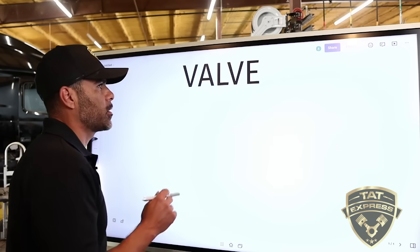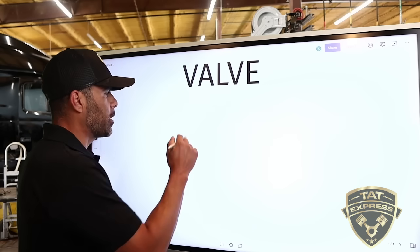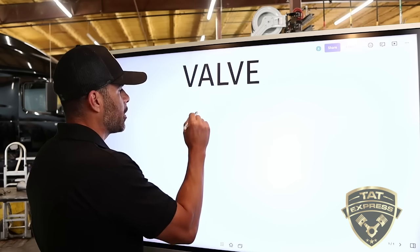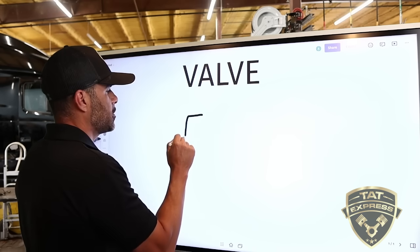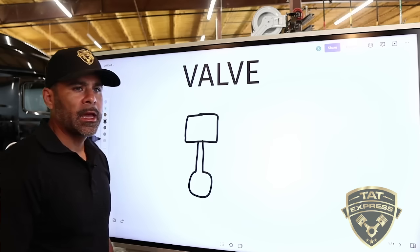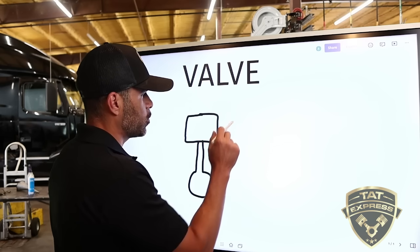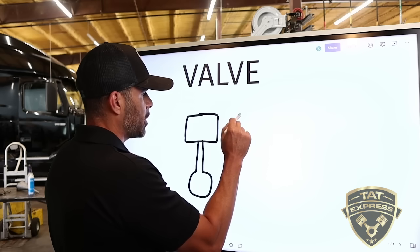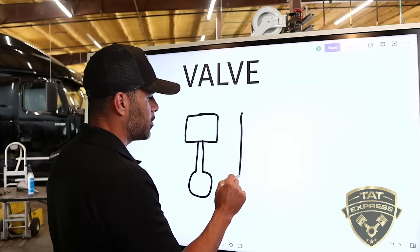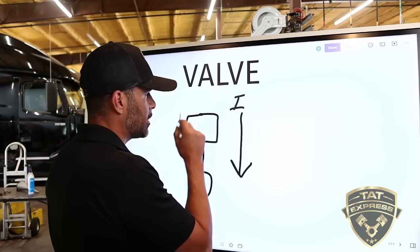First, we're going to discuss what four strokes are, or what happens when a piston goes up and down on an engine. So let's draw out the piston here. So for example, this is our piston. The piston completes four strokes, which means it starts at the top position and it goes down. When it goes down, this is the intake, so it's intaking air.